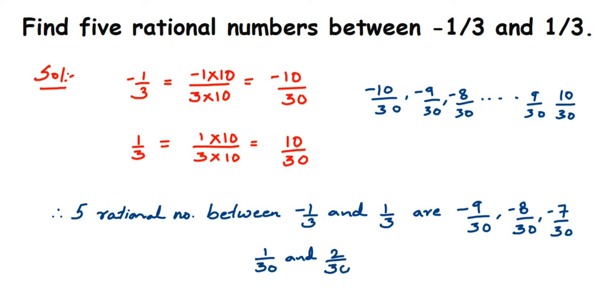So that's it! This is how we find rational numbers between two given rational numbers. I hope this question is clear. If you have any questions or doubts, you can drop a comment below. Thank you so much for watching.